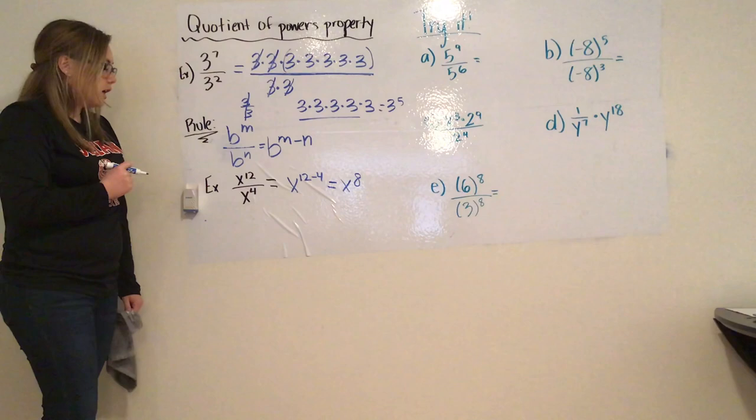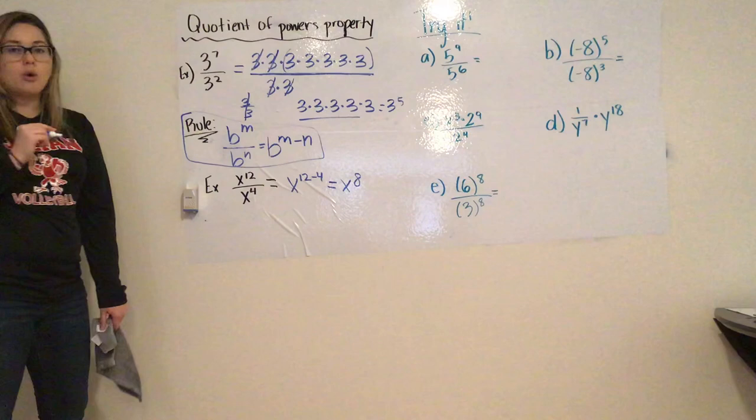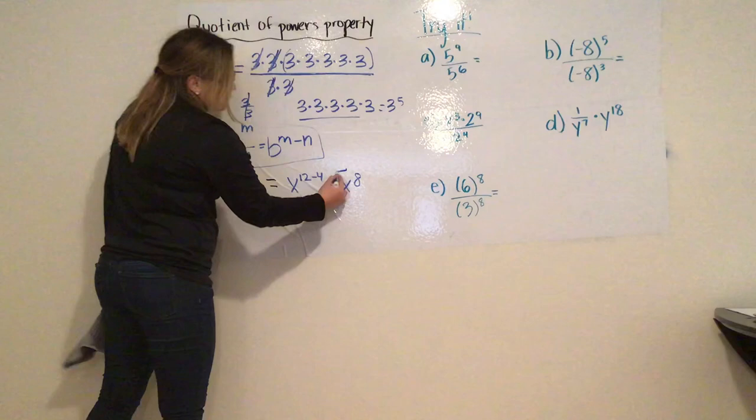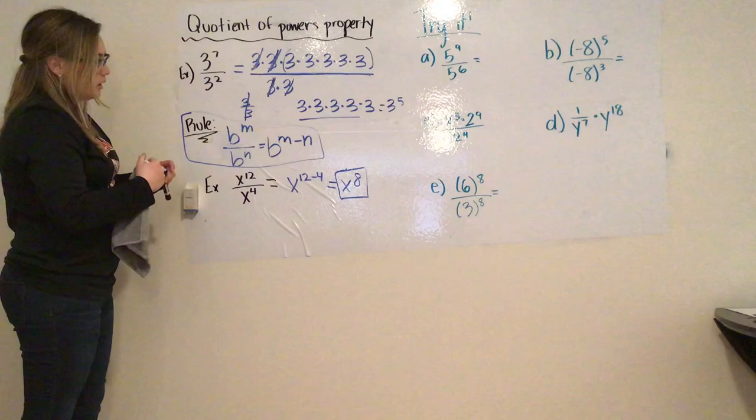As we've talked about before, if you can't remember this rule, you can always expand it out, cancel out like terms because they all go to one, to get to this conclusion of M minus N — subtracting powers.